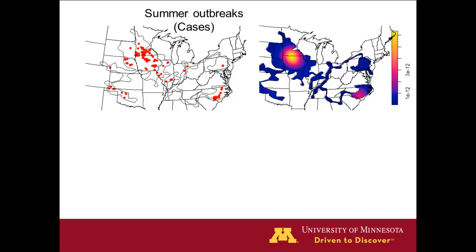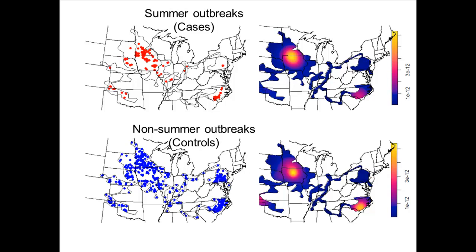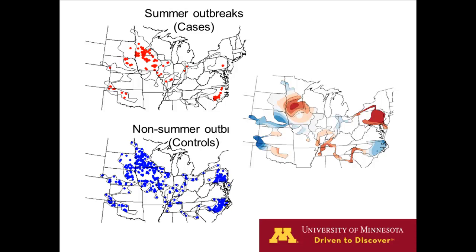We call the summer outbreaks cases and do a cases-versus-controls exercise, with controls being outbreaks that occur in other seasons. You end up with two density maps — one for summer cases and one for non-summer controls. We can then compare these two densities the same way we estimate relative risk, by dividing one density by the other, creating a ratio incidence map of summer outbreaks to identify which areas have more summer outbreaks.